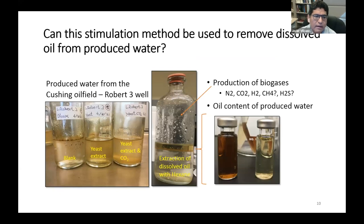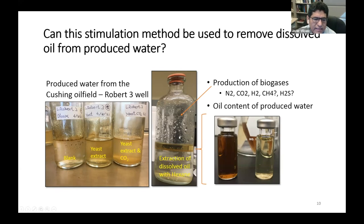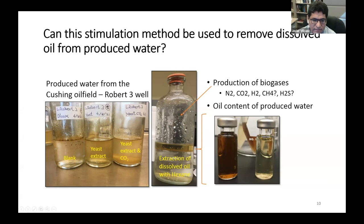The question we are now aiming to answer is whether we can use this method to remove dissolved oil from produced water. The experimental procedure is the same, except that in this case we are not adding oil to the top of the produced water. We extract dissolved oil using hexane and analyze it from produced water using gas chromatography. We also monitor the formation of gases in the headspace — nitrogen, carbon dioxide, hydrogen, methane, and even hydrogen sulfide or oxygen — to verify that this is an anaerobic environment.